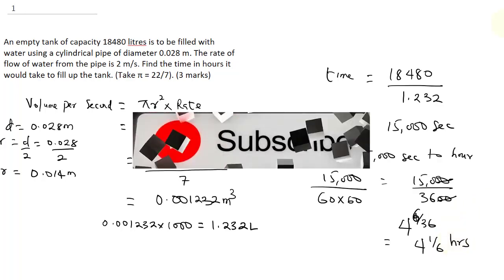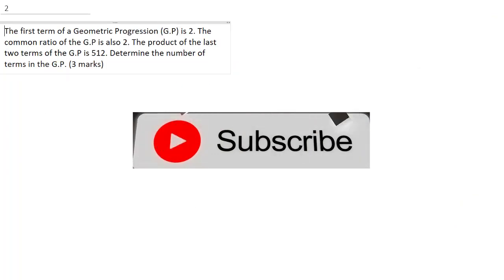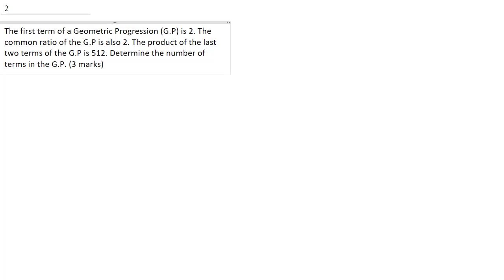Now if this is your first time coming to this channel, don't forget to hit the subscribe button. Question 2 says: the first term of a GP is 2, the common ratio of the GP is also 2, and the product of the last two terms of the GP is 512. Determine the number of terms in the GP.